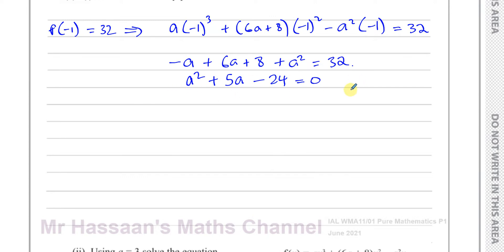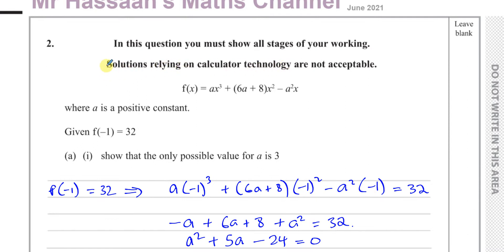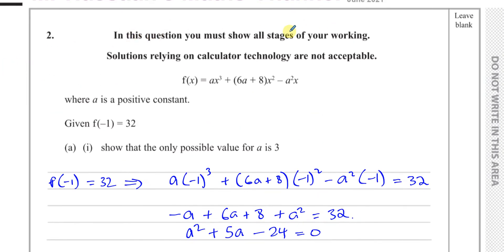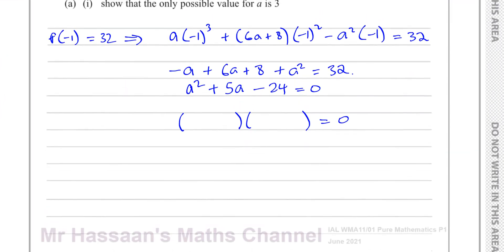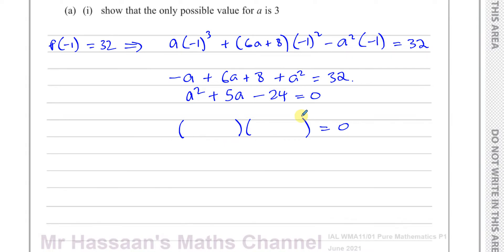To solve a quadratic equation we should equate it to zero to factorize it. Taking the a squared term, then the a terms give plus 5a, and the constant terms give 8 minus 32, which is negative 24, equals 0. So we have a quadratic equation in a. Now, you shouldn't use your calculator's equation feature to find the values of a and just write the answer — that is exactly what the warning at the top of the question is referring to. You must show all stages of your working, so you must factorize.